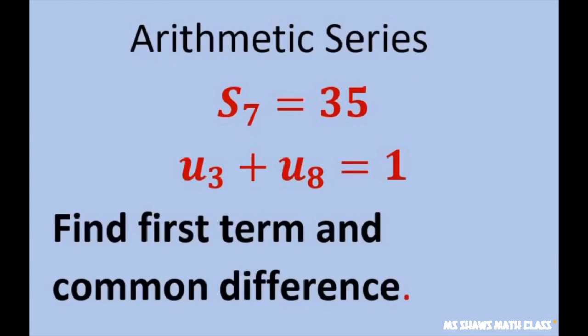Hey everyone, we're going to find the first term and common difference of an arithmetic series given that the sum of the first seven terms is 35 and your third term plus your eighth term equals one.